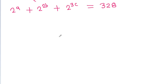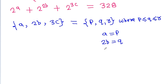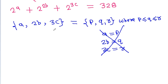Now we let a, 2b, and 3c be assigned to p, q, and r where p ≤ q ≤ r. Note: we are not fixing a=p, 2b=q, 3c=r specifically — whichever value is smallest becomes p, the median becomes q, and the largest becomes r.